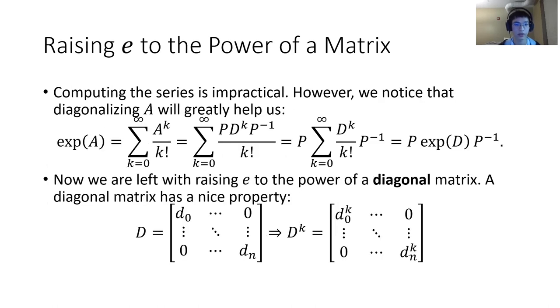As you can see, computing the series directly is impractical. So we will first diagonalize our matrix using the method we have learned in the course. Here, p is the matrix formed by the eigenvectors of a, a is equal to p times d times the inverse of p, where a is raised to the power of k. By applying associativity of matrix multiplication, p times the inverse of p is equal to identity matrix.